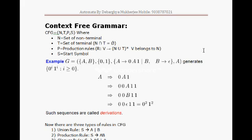In today's class we are going to discuss context-free grammar. In context-free grammar, as we have learned, any grammar is made of N, T, P, S — that means non-terminal, terminal, production rule, and starting symbol. A CFG is also a four-tuple. The production rule for a CFG is: V → (N ∪ T)*, meaning any combination of terminals and non-terminals on the right side, while V belongs to N on the left side, so only non-terminals appear on the left.